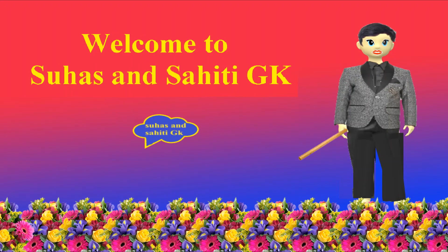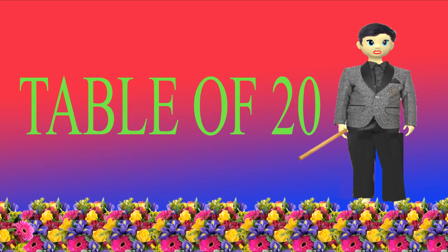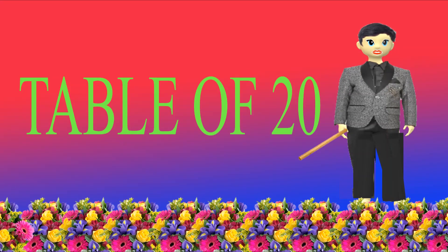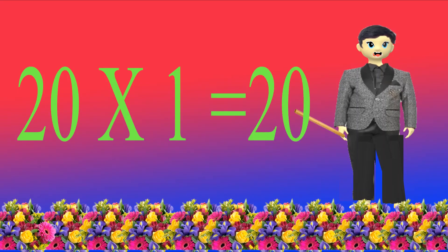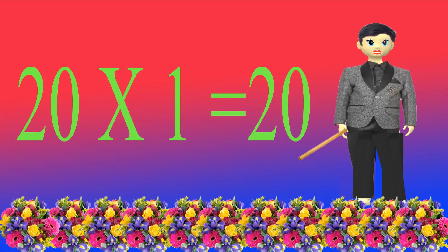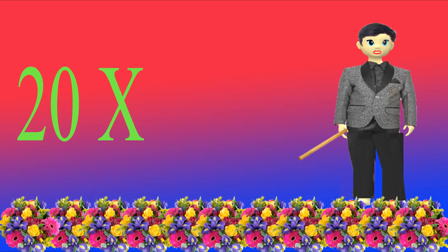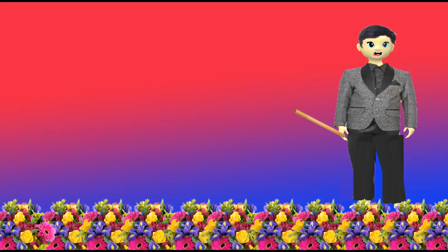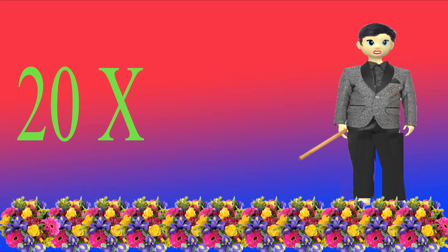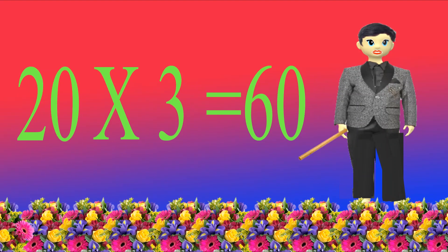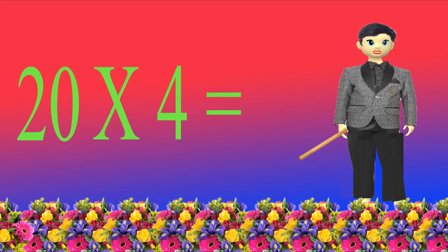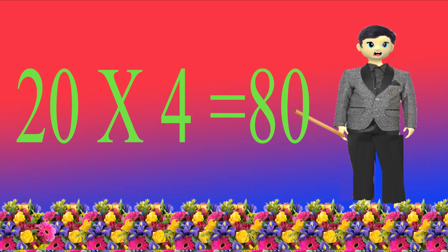Hi guys, welcome to my channel. Today we are learning the 20 times multiplication table. 20 times 1 is 20, 20 times 2 is 40, 20 times 3 is 60, 20 times 4 is 80.